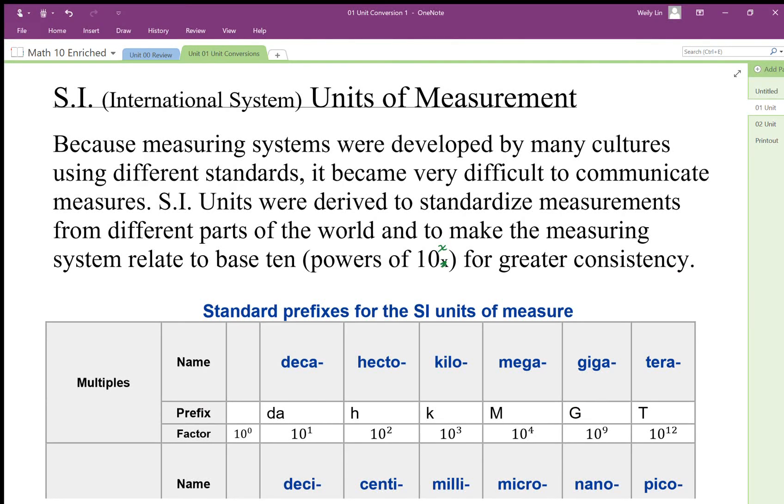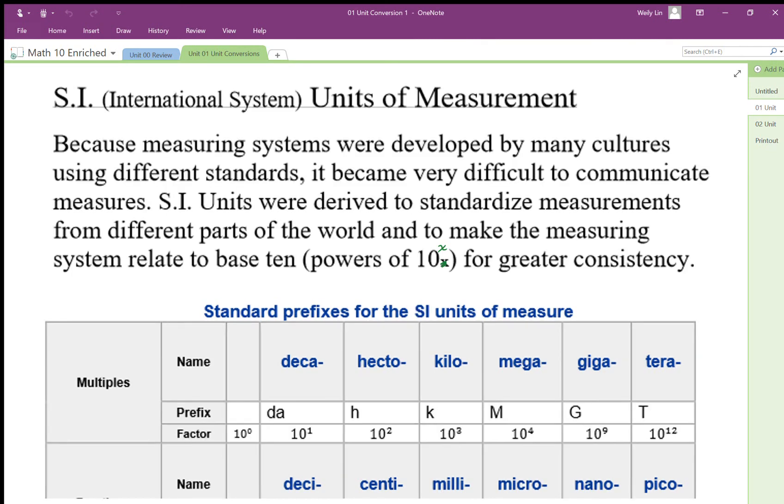The SI system of units of measurement is an international system. It stands for Système International. We have measuring systems that were developed by different places and everyone had different standards of measurement. So in order to make things standard, the international community decided to use SI units or the metric system.